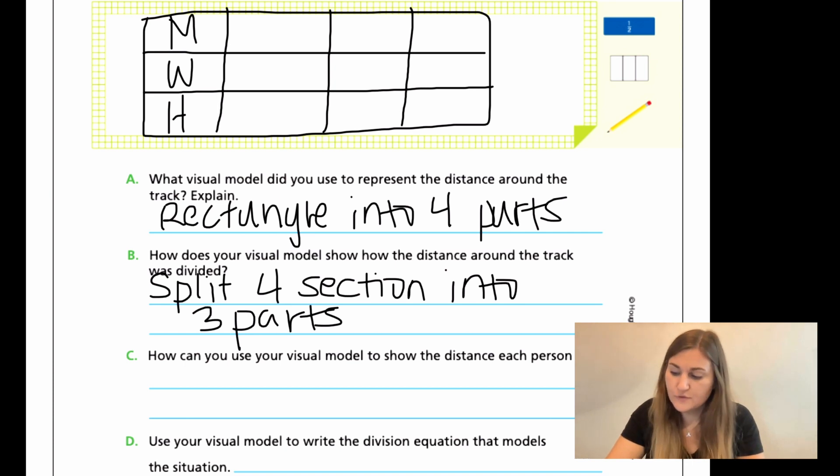So I split the four sections into three parts showing my different friends. Now for C, how can you use your visual model to show the distance each person runs? Well, if I look at just one of the friends, like my first friend, the M for Mieta, she's taking up how much of the whole? Well, her one square is one out of how many are available total in that rectangle. If there's three, four times, three times four would be 12. There are 12 different squares in that section. So it shows one twelfth of the whole.